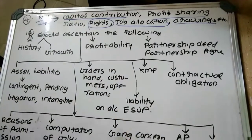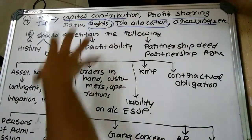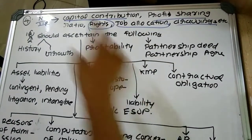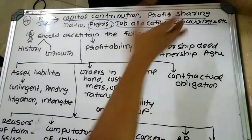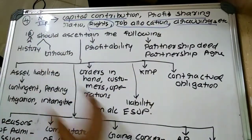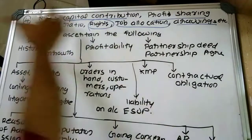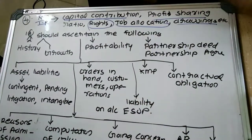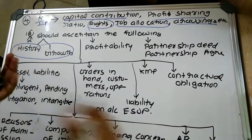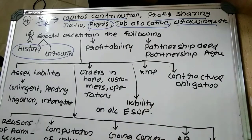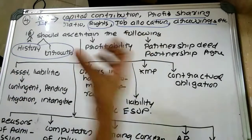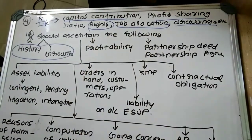The investigating accountant should obtain information about capital contribution, profit sharing ratio, rights allotted to the new partner, job allocation, and whether partners can make appropriate drawings. They should also obtain information about the history and growth of the firm by analyzing the profit and loss account and balance sheet—financial statements of the past 5 to 6 years—to obtain the trend or pattern of growth.